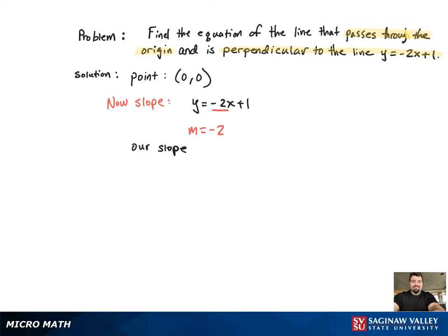Now, our slope, since they're perpendicular lines, it's going to be the opposite reciprocal, or 1 half.